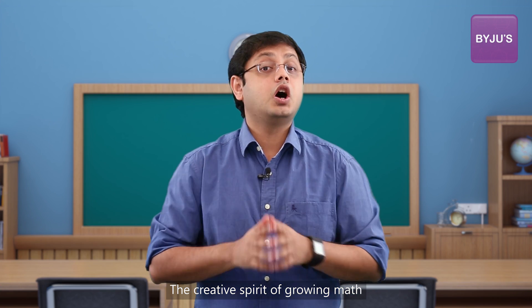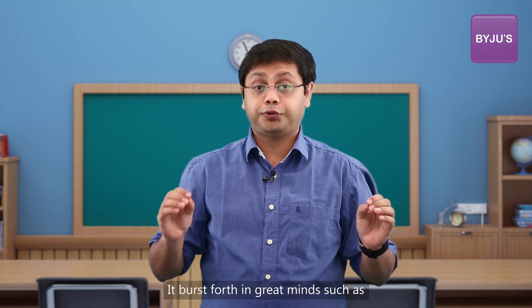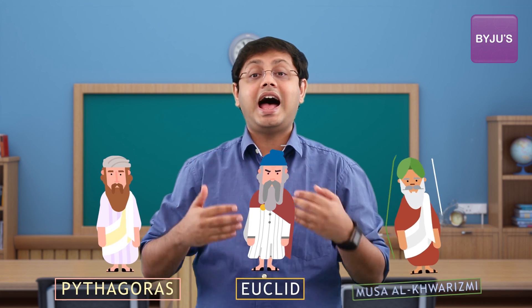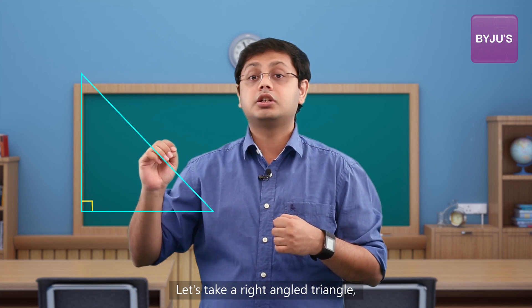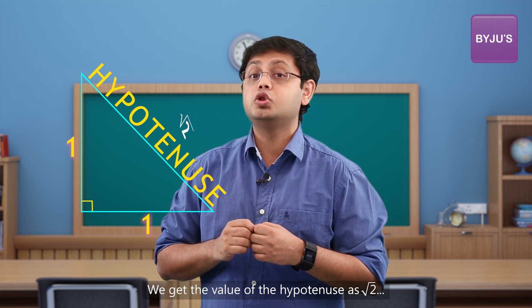The creative spirit of growing math just could not be contained. It burst forth in great minds such as Pythagoras, Euclid, and Musa Al-Khwarizmi. Let's take a right-angled triangle. Both these sides are one. We get the value of the hypotenuse as root two.